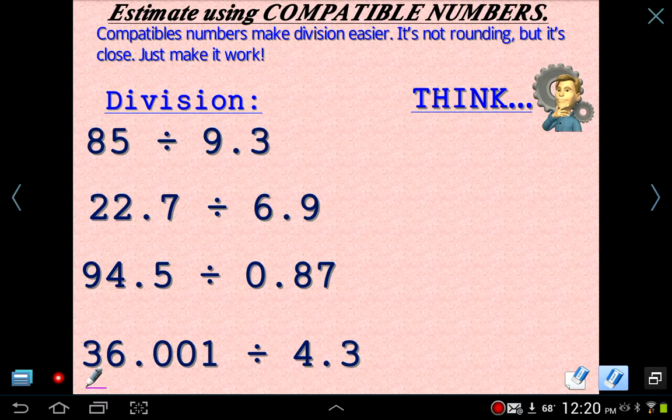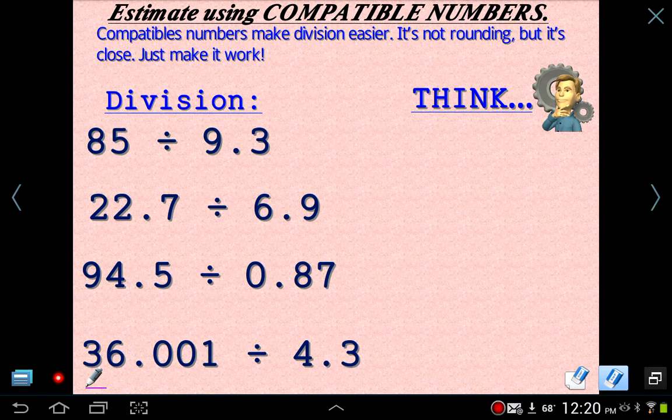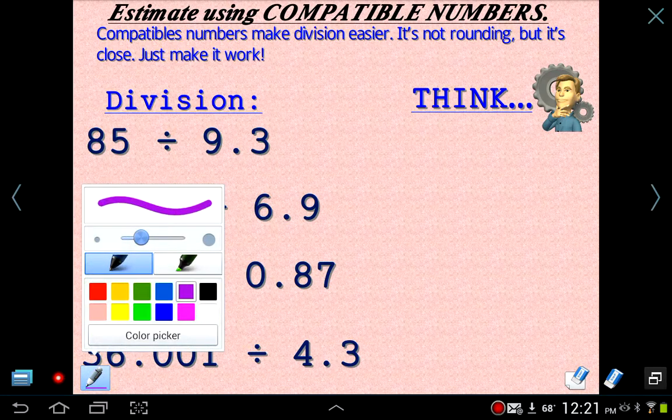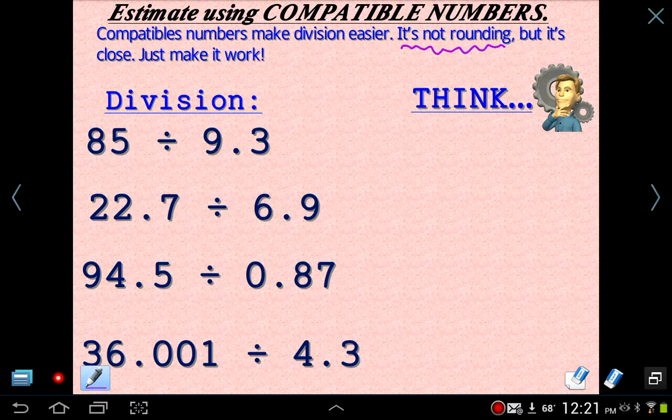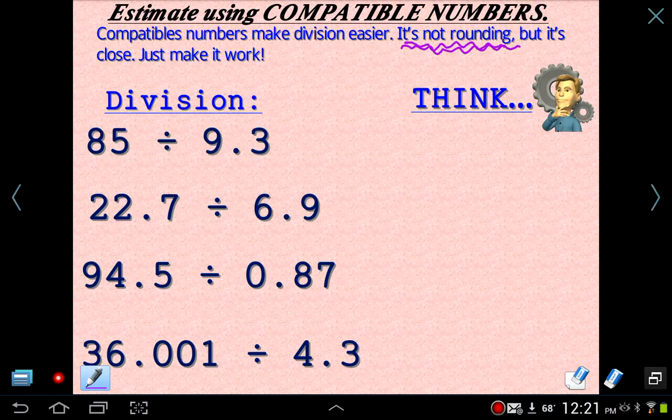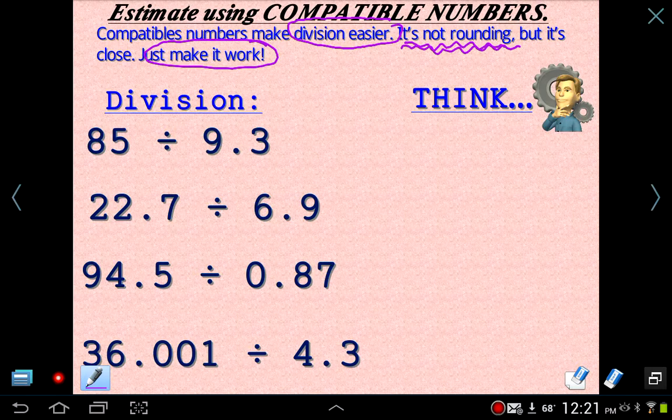Alright. Now another thing that you're going to want to do is use compatible numbers. Estimation using compatible numbers. Now, compatible numbers make division easier. Don't confuse it with rounding. It's not necessarily rounding, although you don't want to be too far off. But it is close to rounding, but it's not rounding. Compatible numbers make division easier. And it's up to you to make it work. You have to make it work out. And you have to be a little bit creative. And this takes a lot of thinking and knowing a little bit about numbers.